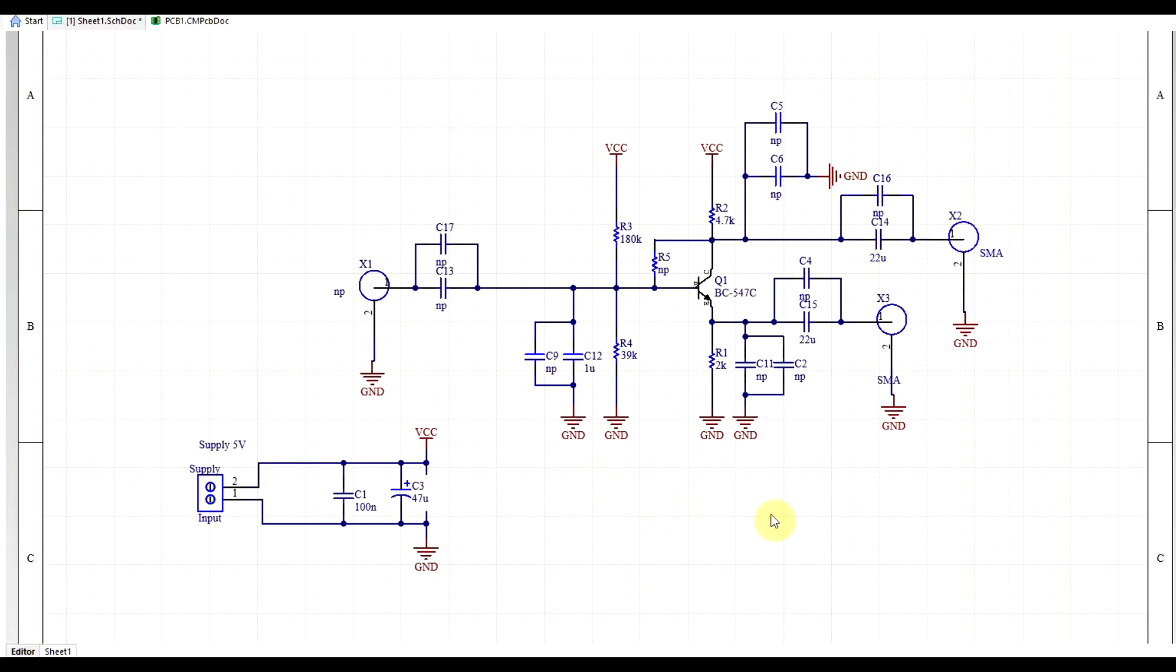The circuit that we will be using today is the one that we ran the most simulations on last time. It's a common-based amplifier built around the BC547C, and this has a base network comprised of a 180 kΩ resistor and a 39 kΩ resistor, which is stabilized by a 1 µF capacitor, and then the transistor has a 2 kΩ resistor in the emitter and the 4.7 kΩ resistor in the collector. And the signal is connected through a couple SMA connectors, AC coupled through 22 µF capacitors.